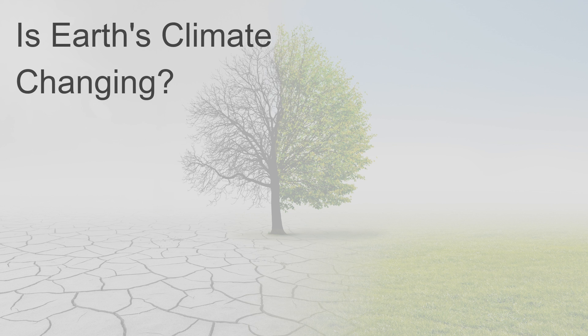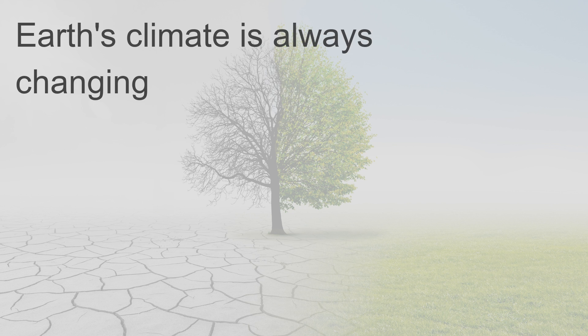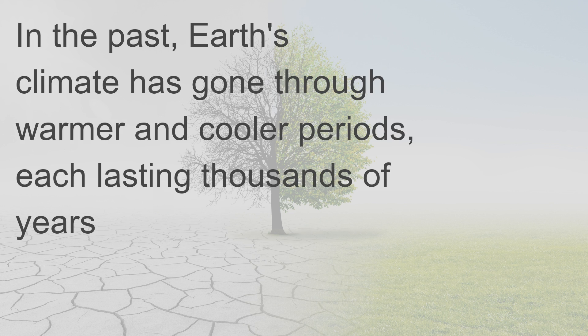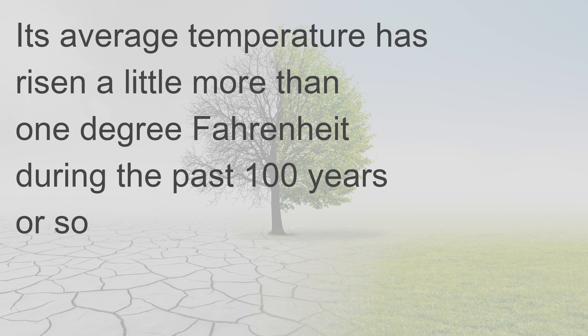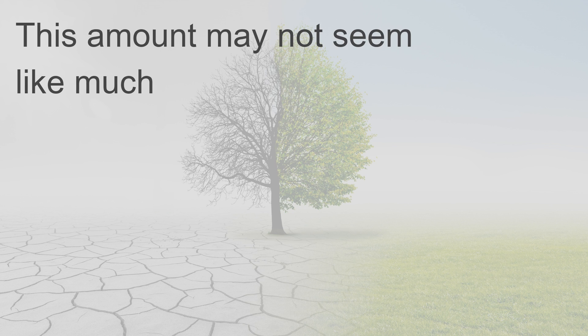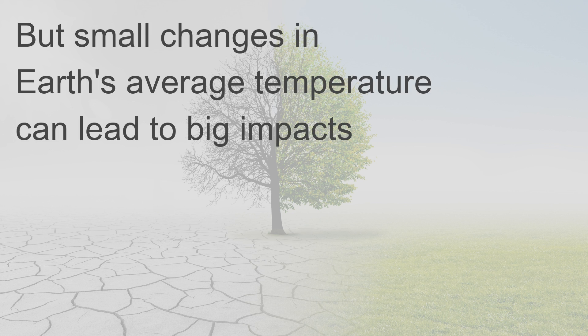Is Earth's climate changing? Earth's climate is always changing. In the past, Earth's climate has gone through warmer and cooler periods, each lasting thousands of years. Observations show that Earth's climate has been warming — its average temperature has risen a little more than one degree Fahrenheit during the past 100 years or so. This amount may not seem like much, but small changes in Earth's average temperature can lead to big impacts.